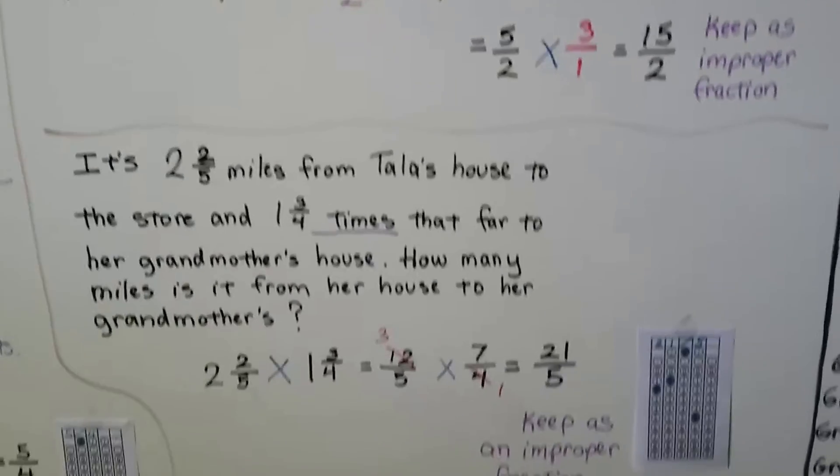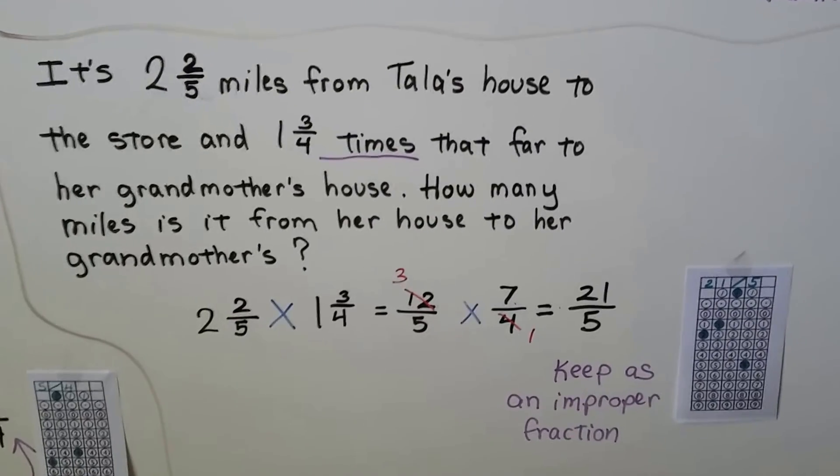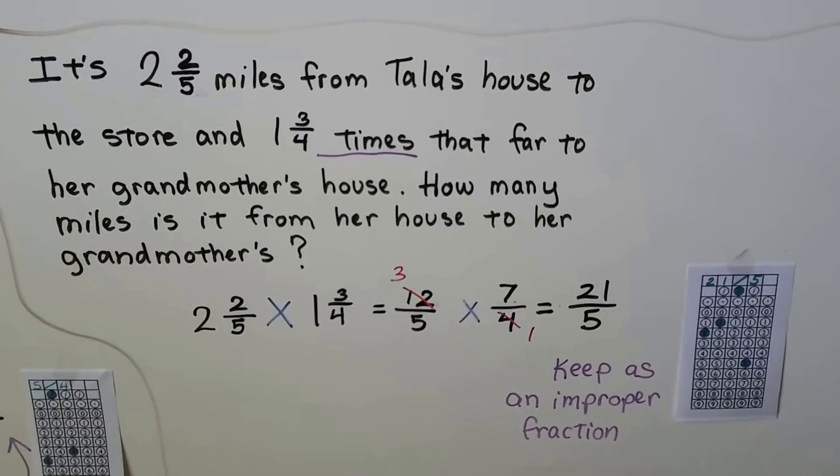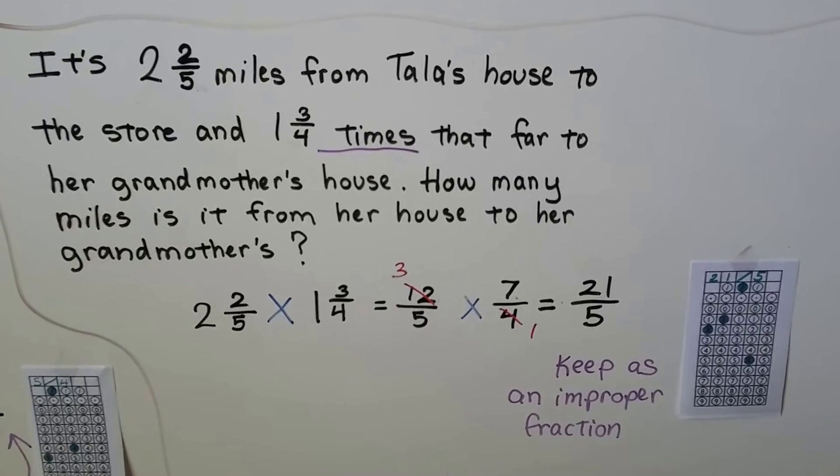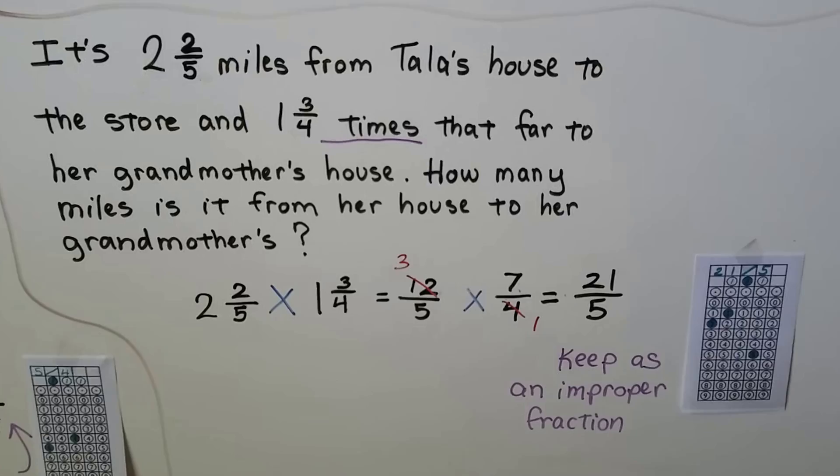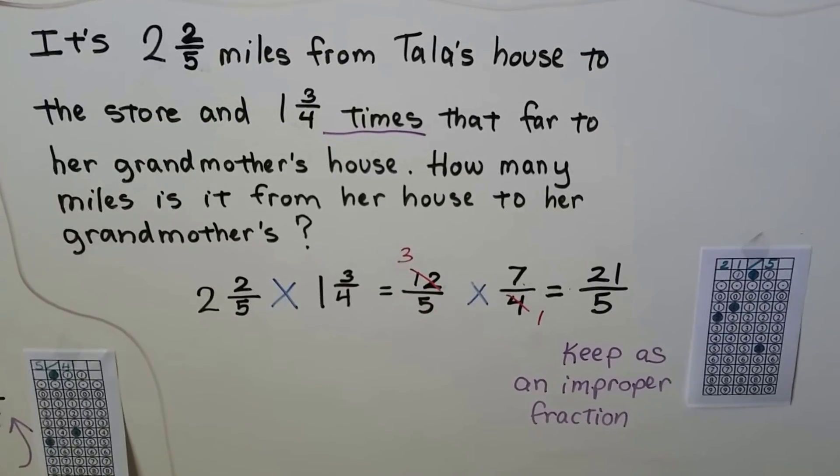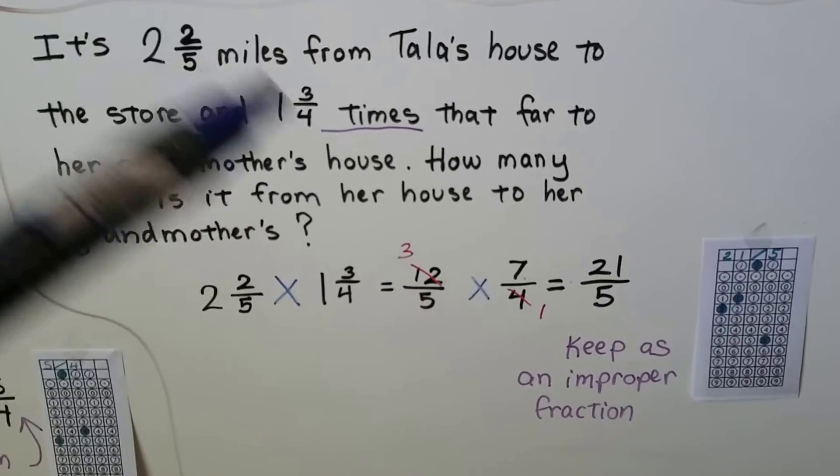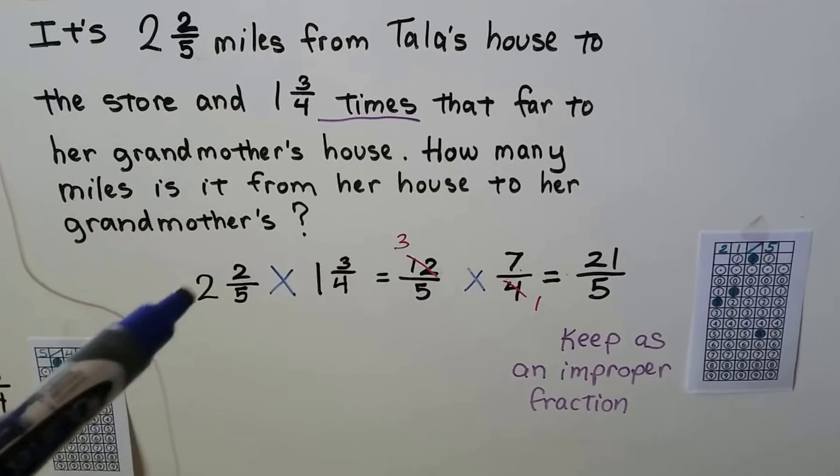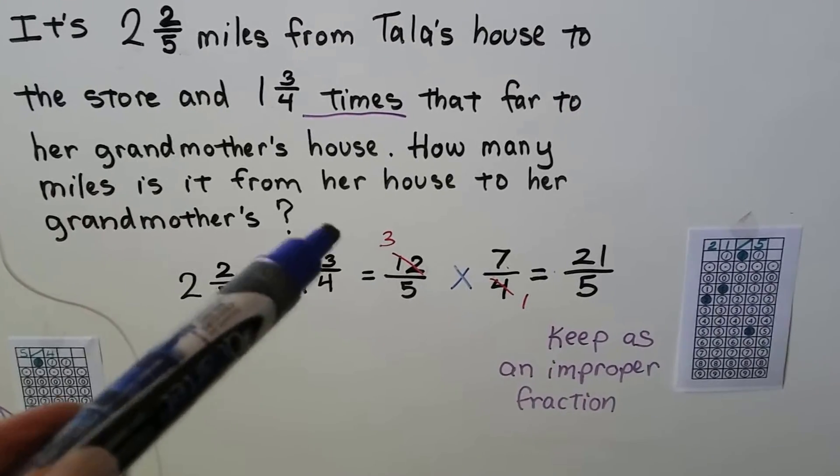I got one more for you. It's 2 and 2/5 miles from Tala's house to the store, and 1 and 3/4 times that far to her grandmother's house. So how many miles is it from her house to her grandmother's? It tells us it's times, so we already know we're going to multiply these two together. We have 2 and 2/5 times 1 and 3/4.